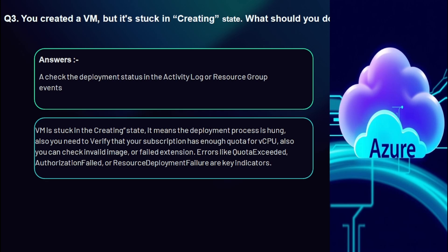Question 3: You created a VM but it's stuck in the 'Creating' state — what should you do? Check the deployment status in the Activity Log or Resource Group events. A VM stuck in the creating state means the deployment process is hung. Verify that your subscription has enough quota for vCPUs, and check for invalid image or failed extension errors. Key indicators include quota exceeded, authorization failed, or resource deployment failure.